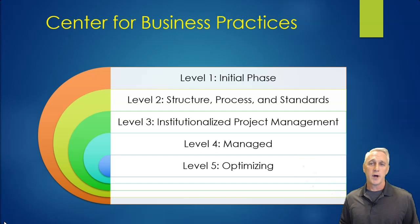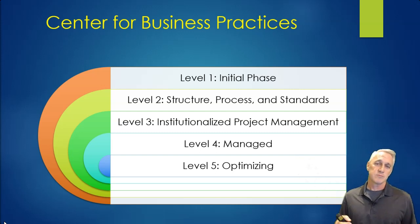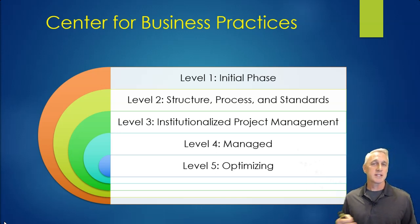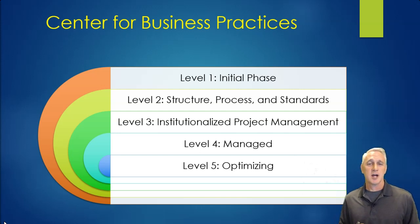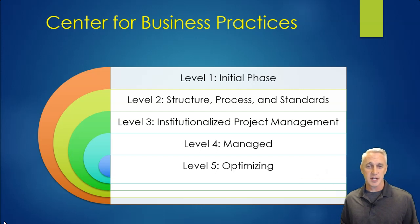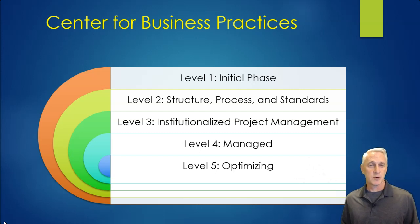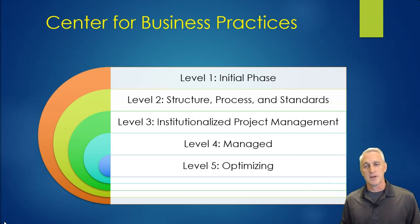For the Center for Business Practices model, level one is the initial phase — meaning the organization is just starting project management. Level two is structured process standards. Level three is institutionalized project management. Then there's managed and optimizing at levels four and five. Some of those terms don't intuitively tell you exactly what they mean, so you'd need to read more from the Center for Business Practices to understand what each level entails.